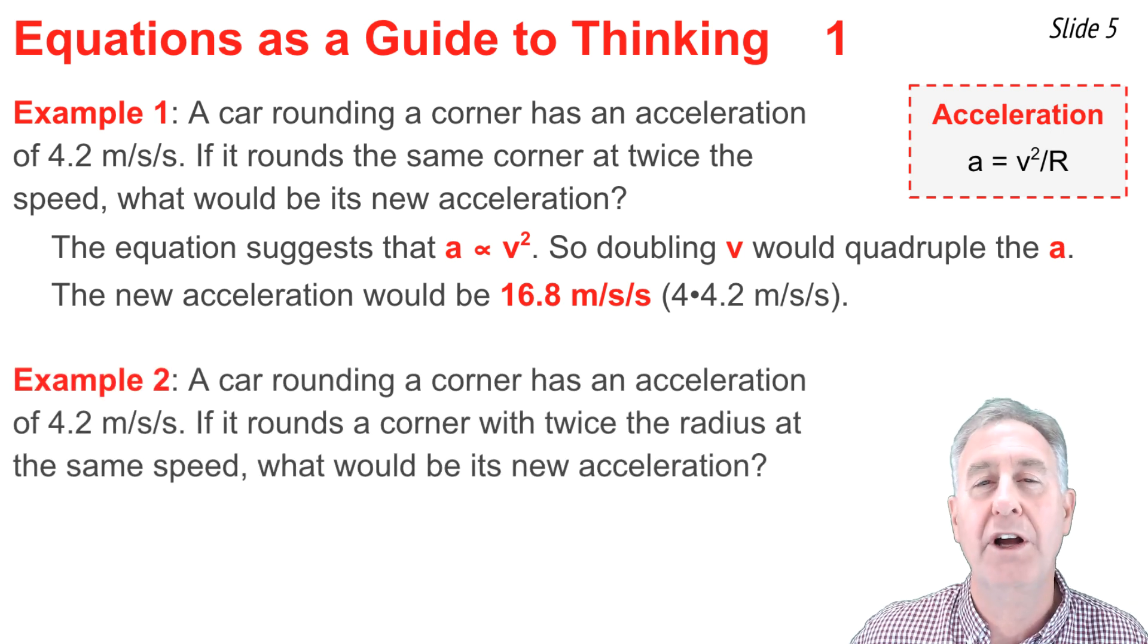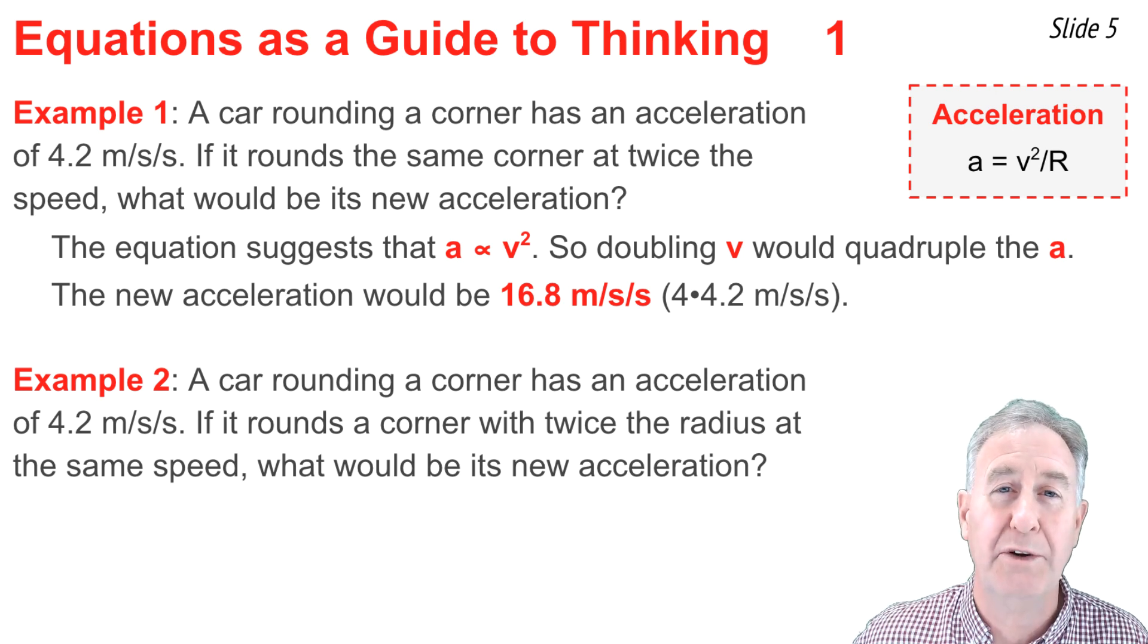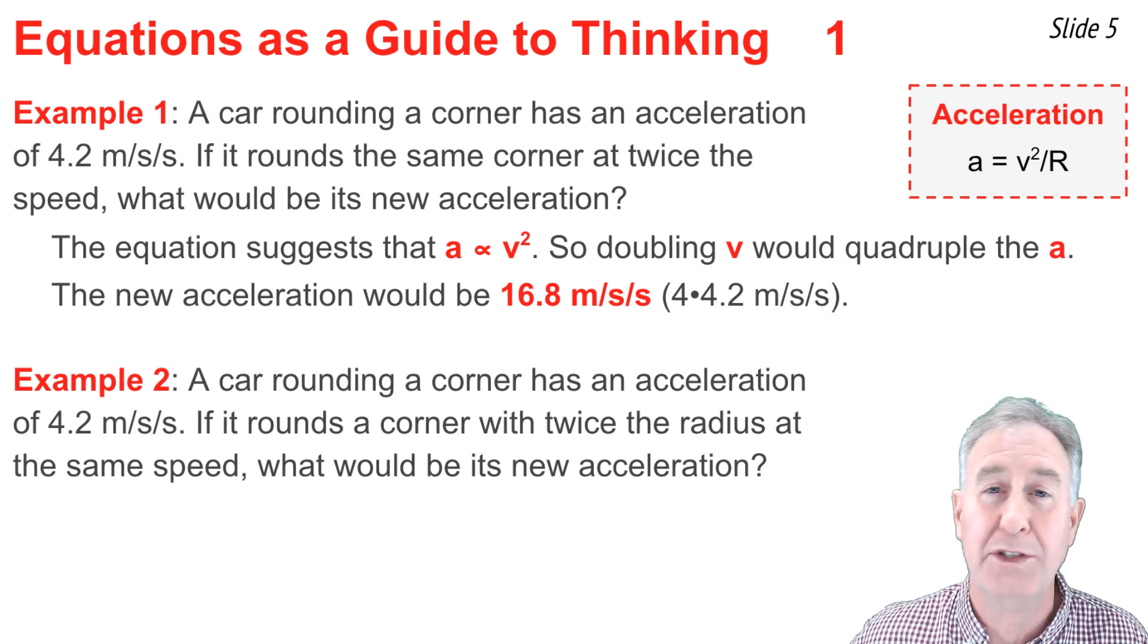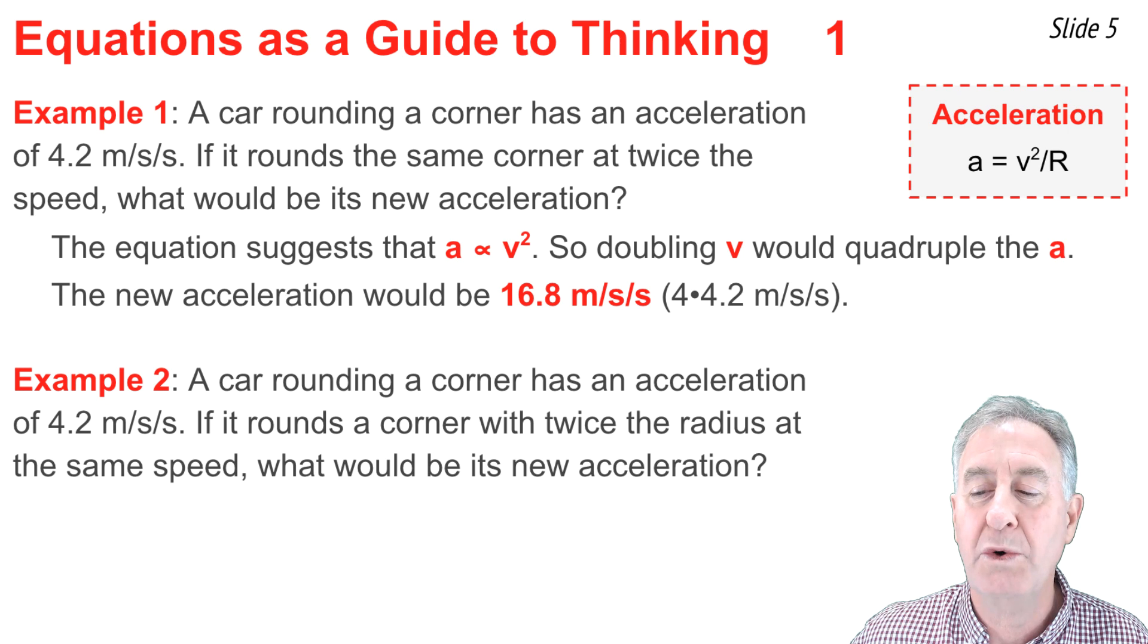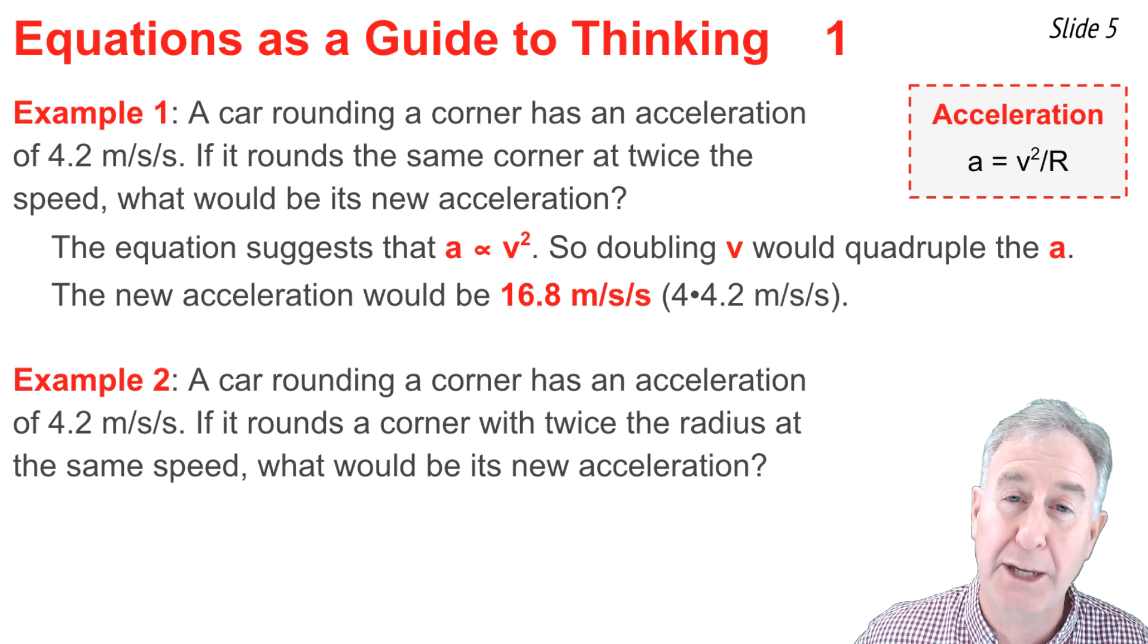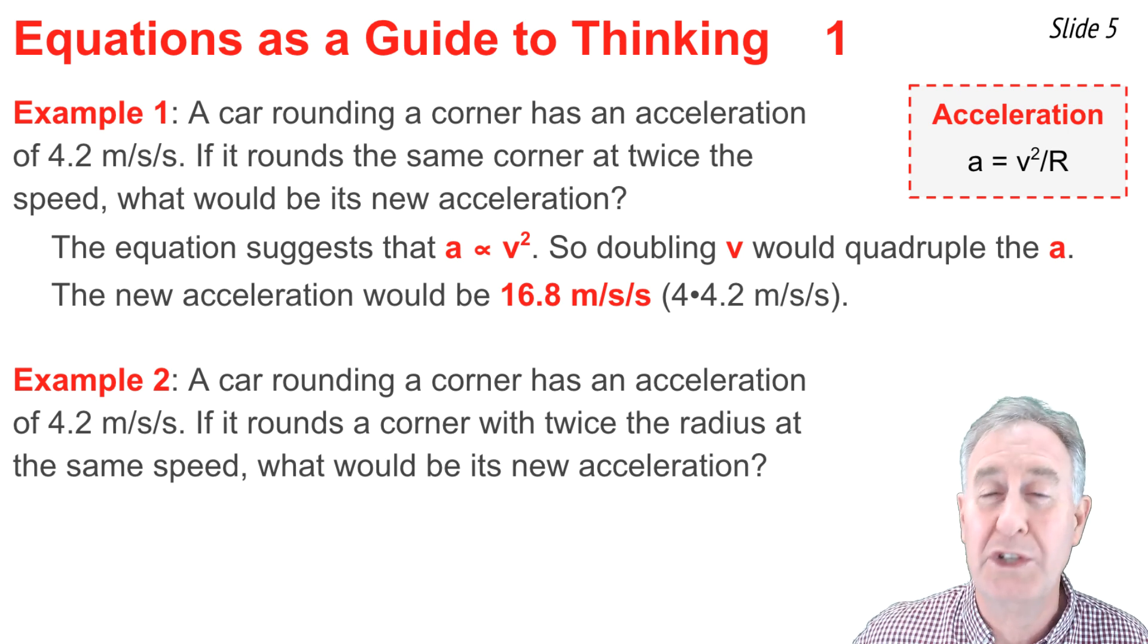In our second example, a car is rounding a corner and has an acceleration of 4.2 meters per second squared. But if it rounds a corner with twice the radius at the same speed, what would be the new acceleration?